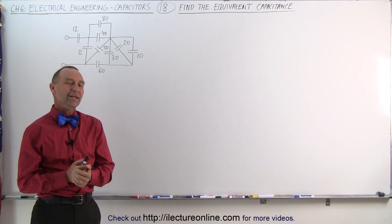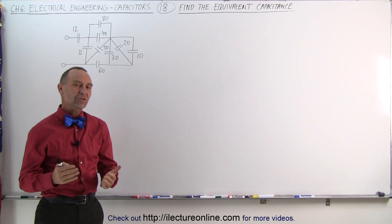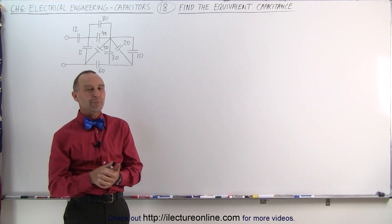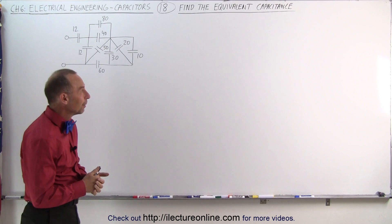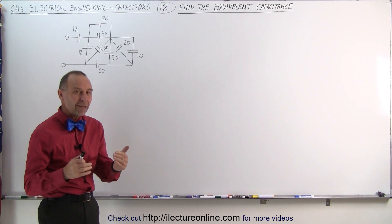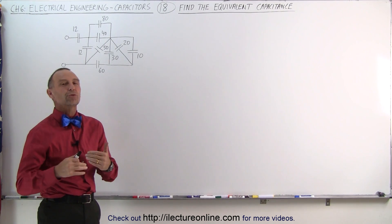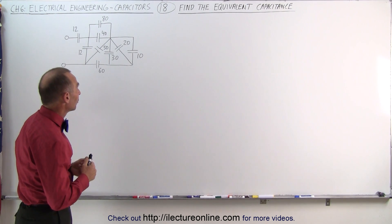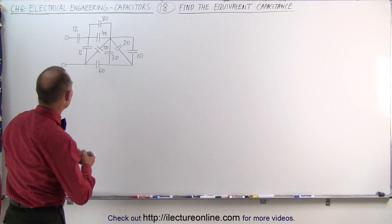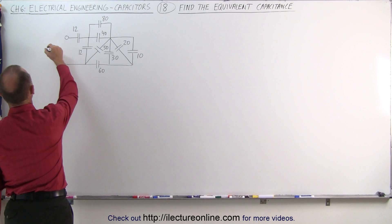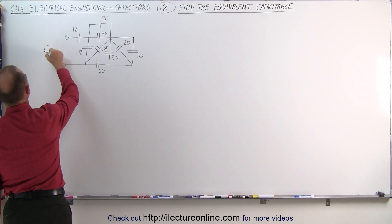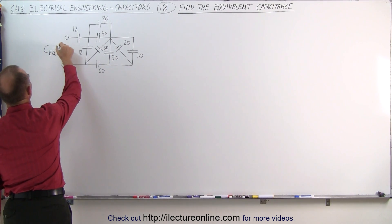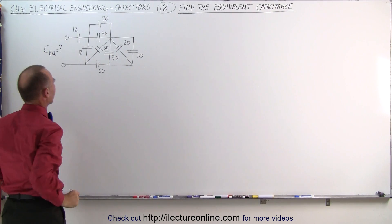Welcome to ElectronLine. Our next circuit is a little bit more complicated than the previous one, but if we use the same standard approach, it should not be a problem. We're trying to find the equivalent capacitance — C equivalent equals question mark.